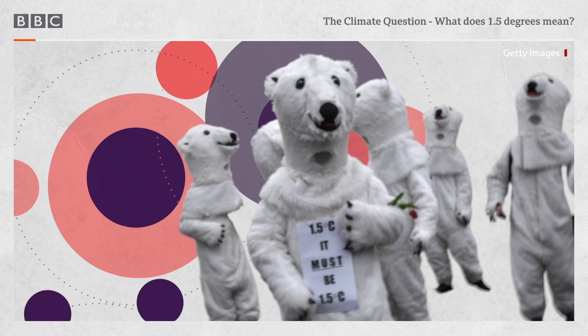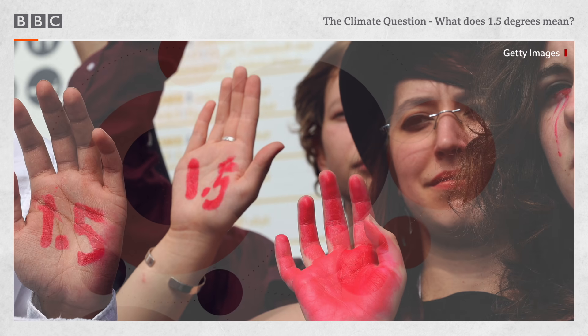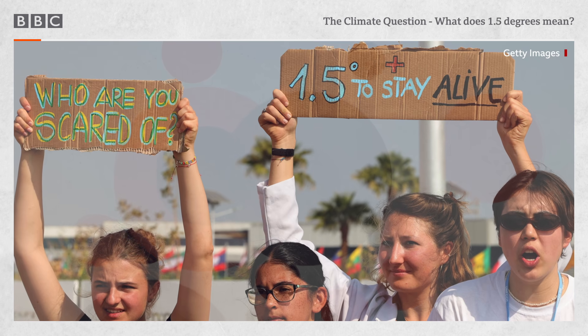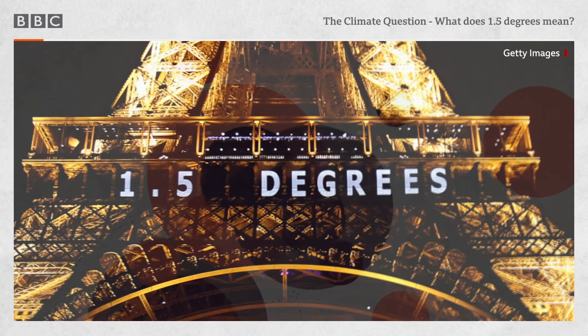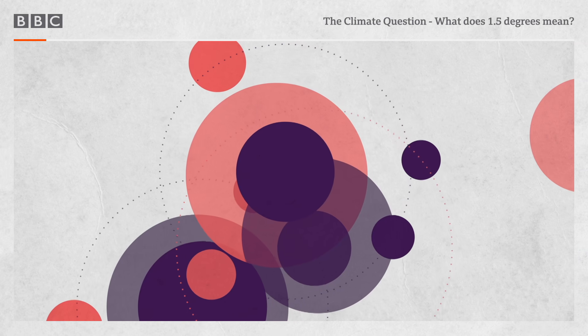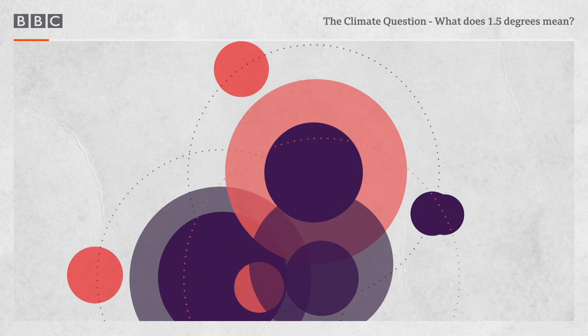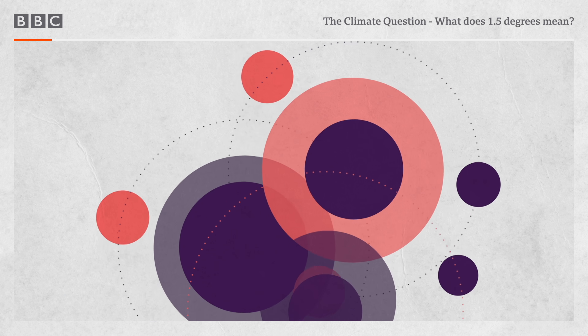They reckon the average global temperatures will have risen by 1.5 degrees centigrade. There's more discussion about striving to be close to 1.5 degrees. We should aim for under 1.5 degrees. Limiting the global temperature rise to below 1.5 degrees Celsius. One little number to rule them all. You must have heard of it on the news, chanted on the streets, or maybe in your social feed. 1.5.